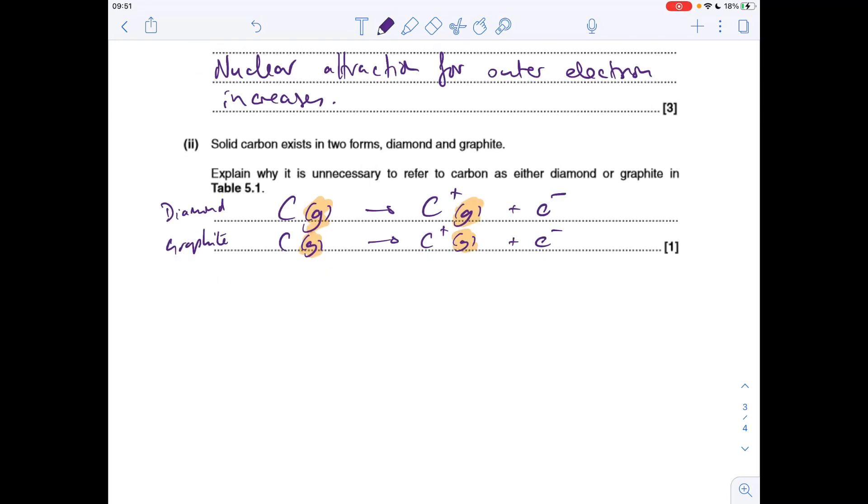Next question, so I'm using equations to help explain this one. If I was to write the first ionization energy equations for diamond or graphite, I'd basically be writing the same equation. And the important thing to note is that ionization energies are always measured under gaseous conditions, so it really doesn't make a difference whether it's diamond or graphite, it's the same equation.